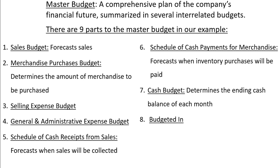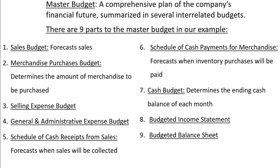Eighth will be a budgeted income statement to project the budgeted net income. Ninth is the budgeted balance sheet, which determines the projected balance of all asset, liability, and equity accounts as of the end of the budgeted period. In this video we will only be completing the first two budgets — the sales budget and the merchandise purchases budget — and in subsequent videos we will complete the remaining seven parts to the master budget.